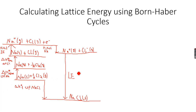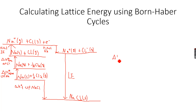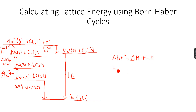If you remember, I said that ΔHf° is equal to ΔH, which was the culmination of all these steps from the elements to the gaseous ions — all these steps contributing to ΔH — plus lattice energy. So if I want to calculate lattice energy, I make lattice energy the subject, and this becomes ΔHf° minus ΔH.